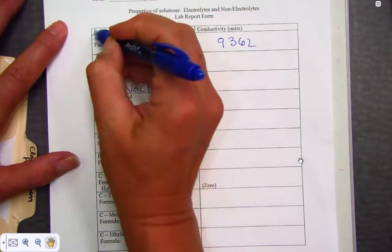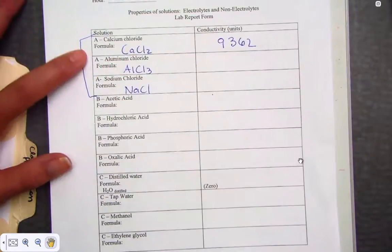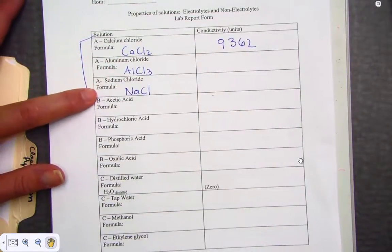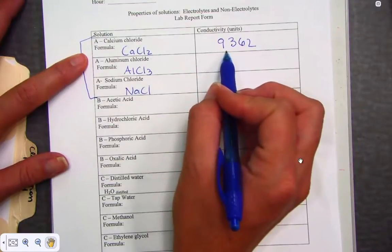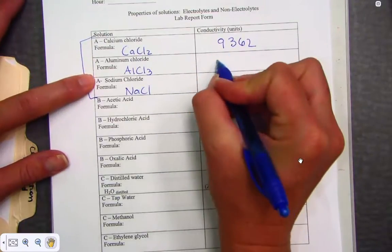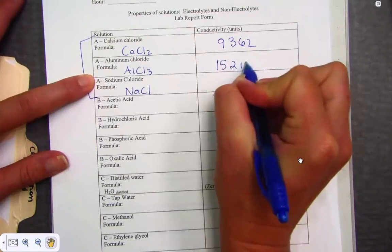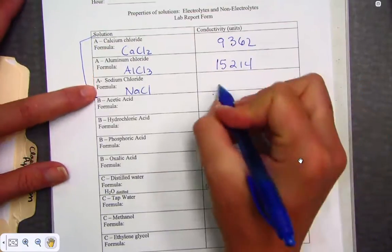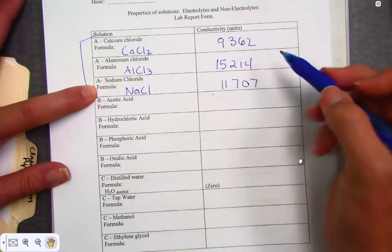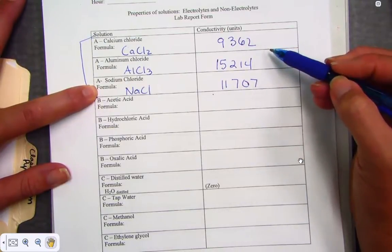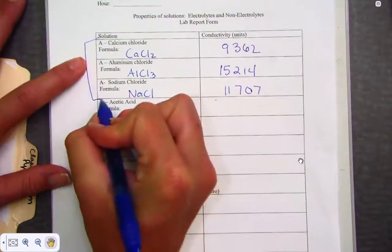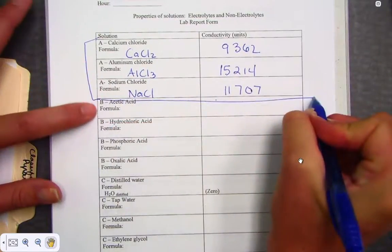So for category A, three different ionic compounds. Calcium chloride, about 9,362. Aluminum chloride, 15,214. And sodium chloride, 11,707. To repeat, these numbers aren't important. It's the magnitude when we compare them that I find very important.